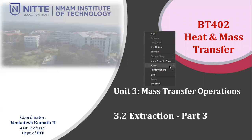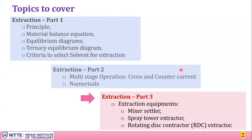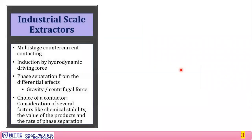Hello and welcome for the next part of mass transfer operations — extraction Part 3. In this video, we'll look into different equipment used for extraction, all related to multi-stage extraction. We'll be looking into three main types commonly used: mixer-settler, spray tower extractor, and rotating disc contactor (RDC). Industrial scale extractors usually use multi-stage counter-current extraction for improving recovery and efficiency.